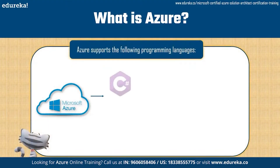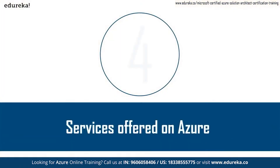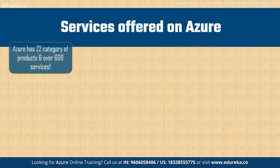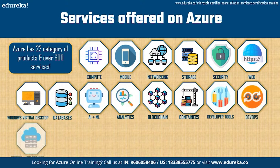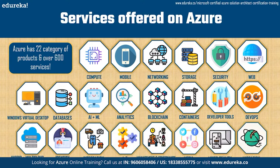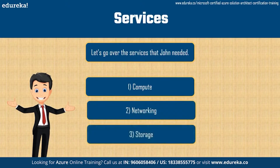The languages supported on Microsoft Azure are C#, F#, Java, TypeScript, and Python. Moving on to services offered on Azure: Azure has 22 categories of products and over 600 services in total. We won't be able to cover all 600, so as homework, go to Azure's website and check out each category. If you have questions, comment below and we'll be happy to answer. John needed three services for his app: compute, networking, and storage.